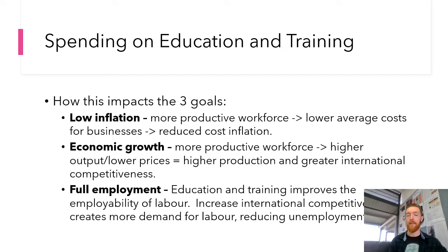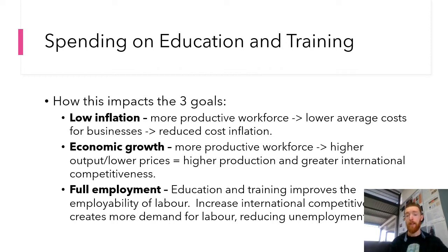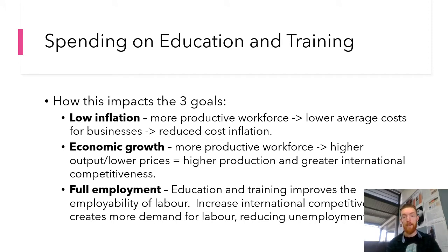So with that, let's look at how it impacts the three goals. For low inflation, a more productive workforce means lower average costs for businesses, because they're getting more output per unit of input. That's going to reduce cost inflation because those lower prices can be passed on to the consumer — great for achieving the goal of low inflation. For economic growth, a more productive workforce leads to higher output and lower prices, meaning greater international competitiveness because we have more goods and services available at a lower price.